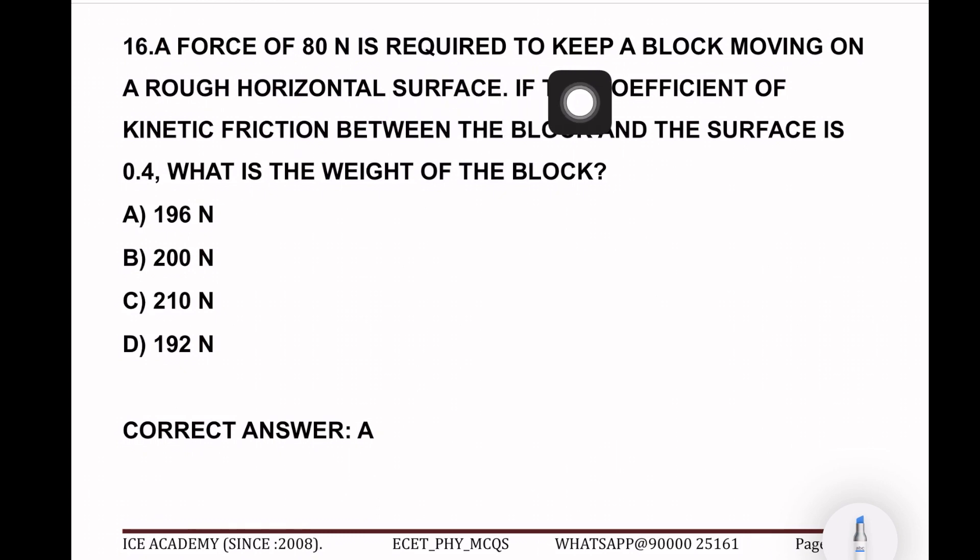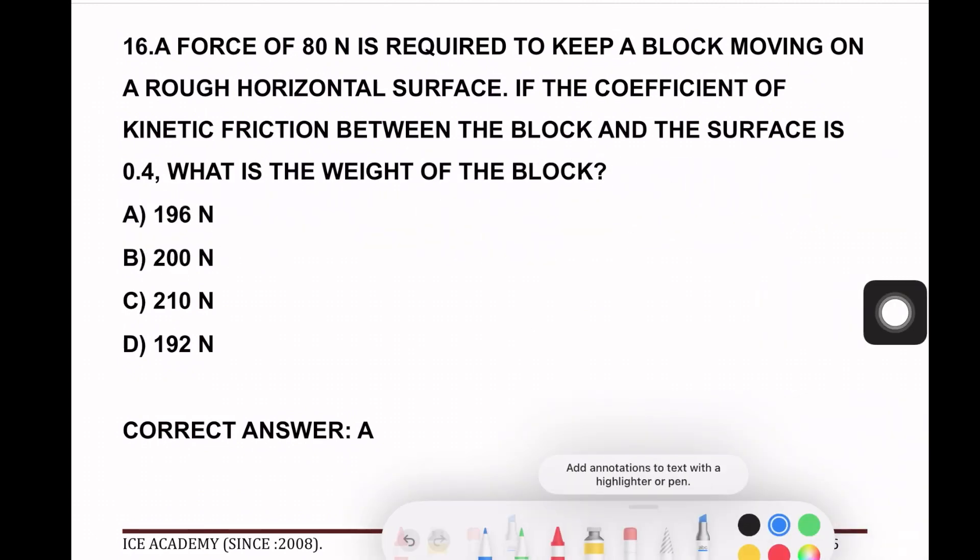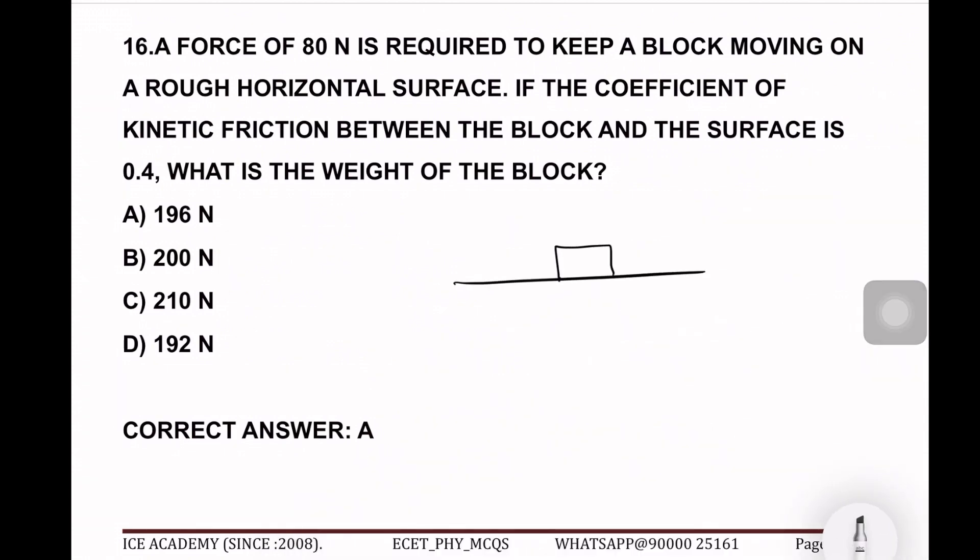Okay, next question. If the force of 80 N is required to keep the block moving on the rough horizontal surface, if the coefficient of kinetic friction between the block and the surface is 0.4, what is the weight of the block? So if we have a problem, we have a problem. We have a block. Force of 80N is required to keep the block moving on the rough horizontal surface. If we pull it, we call it 80N force. Actually, it is required to keep the block moving on the rough horizontal surface. So we have 80N force required. The coefficient of kinetic friction, coefficient of friction is 0.4, mu value is 0.4. Now, the weight of the block is required.